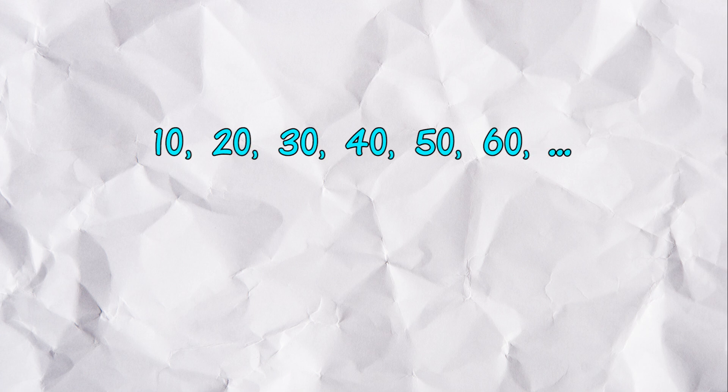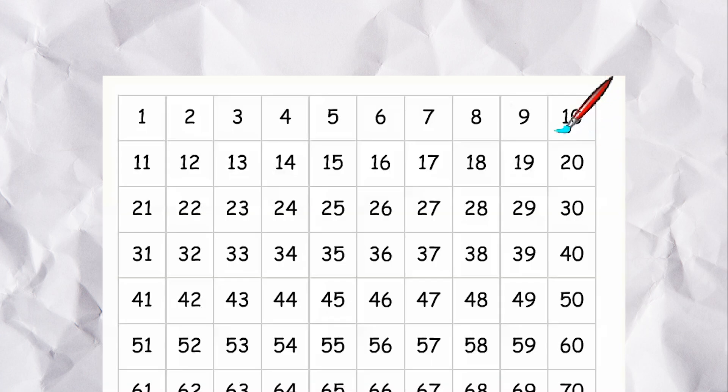Skip counting by tens is the easiest. It is like normal counting, except there is an extra zero. Start at 10, then 20, 30, 40,